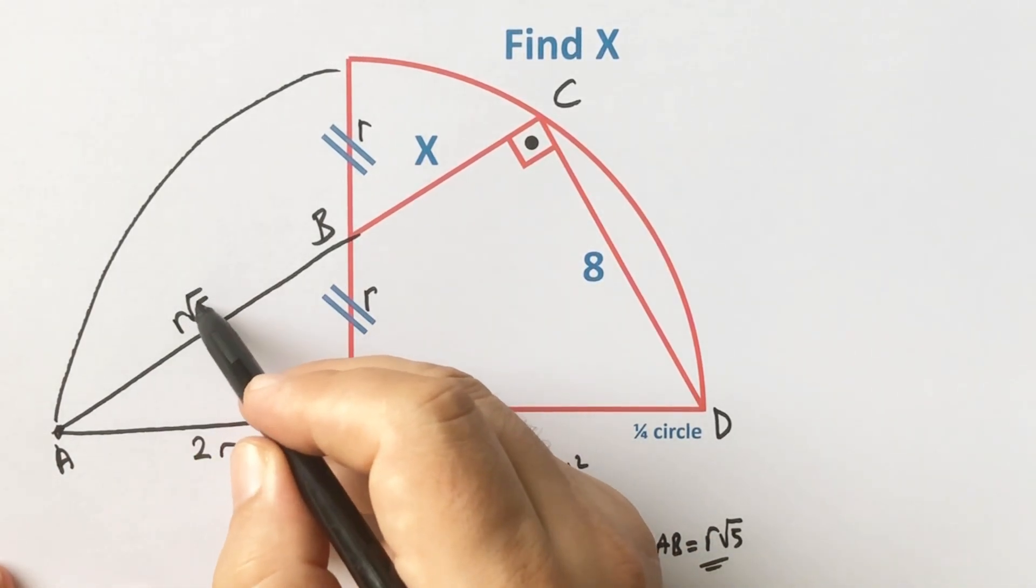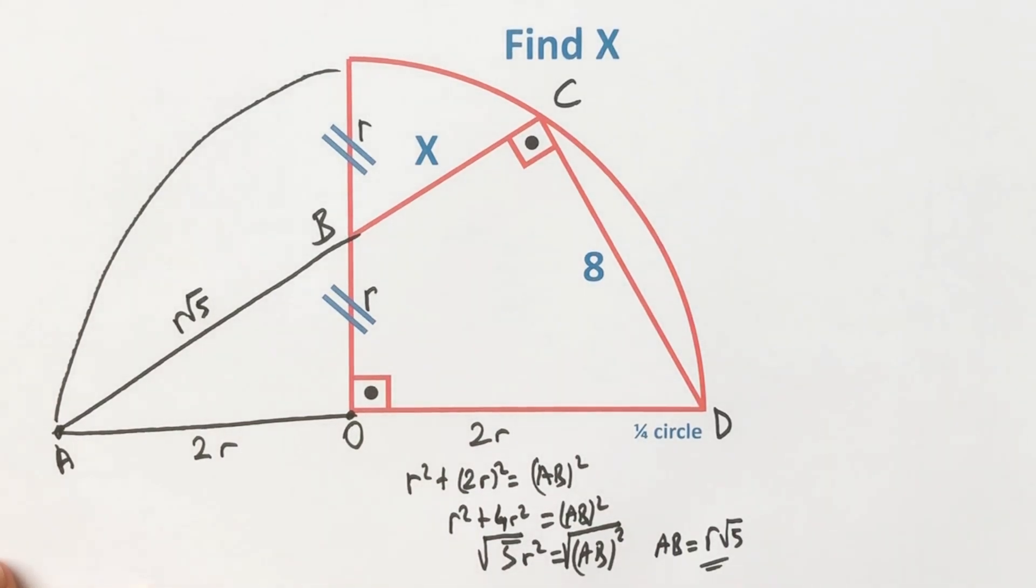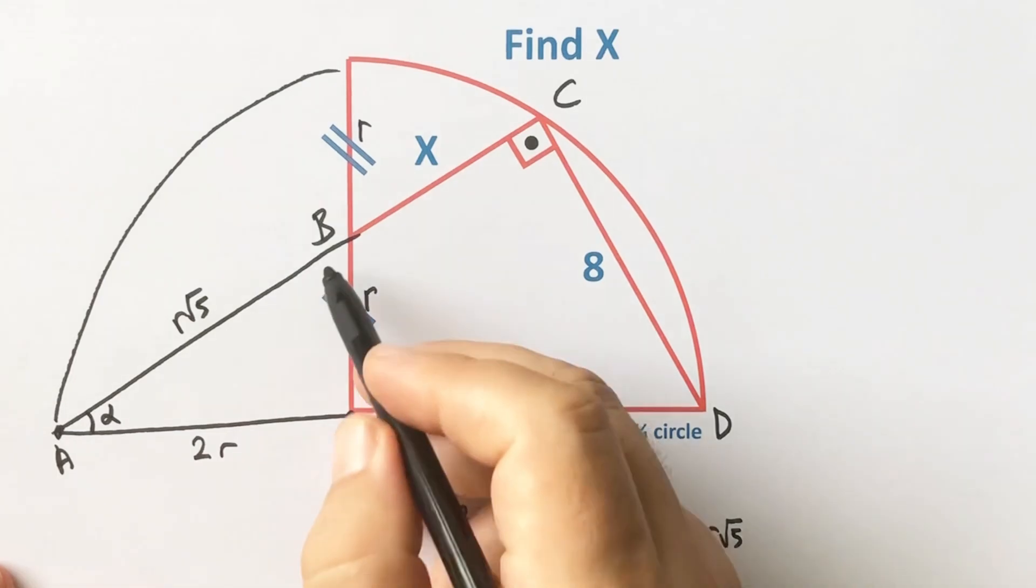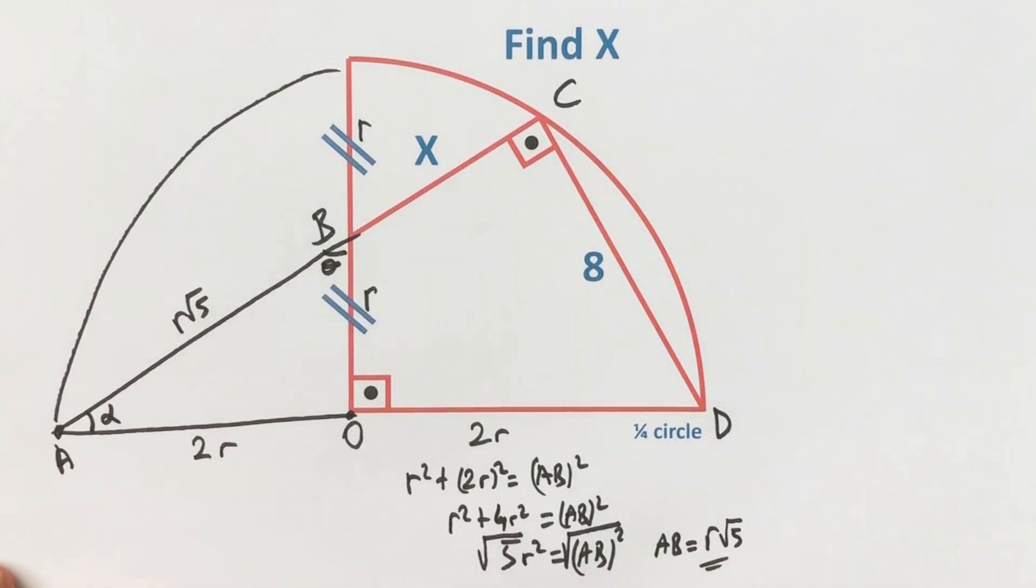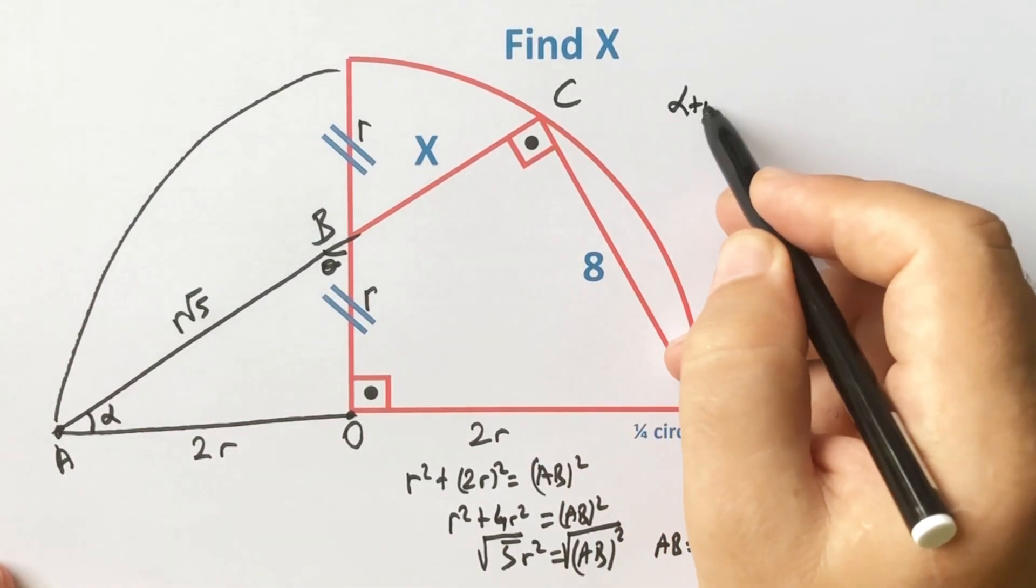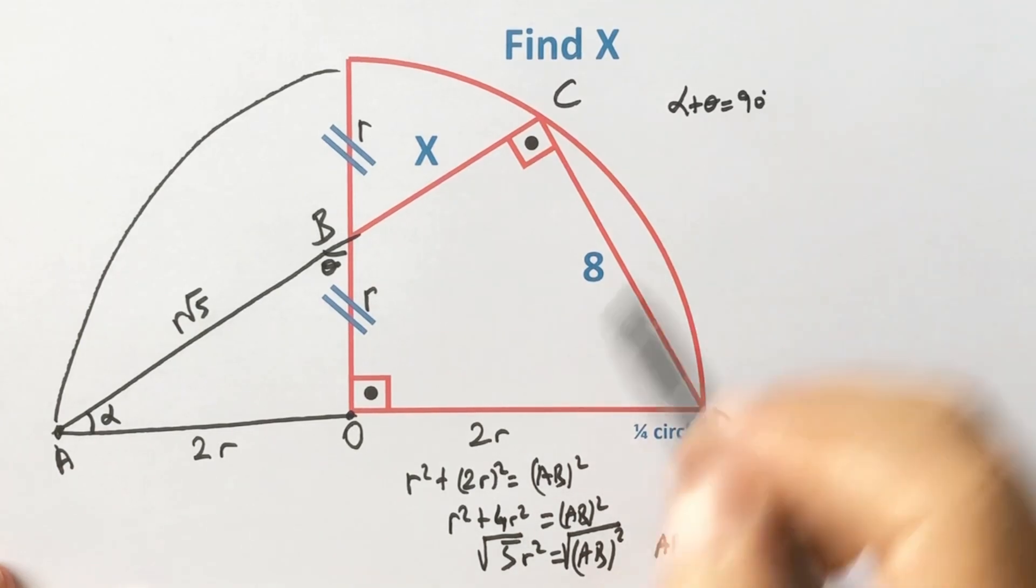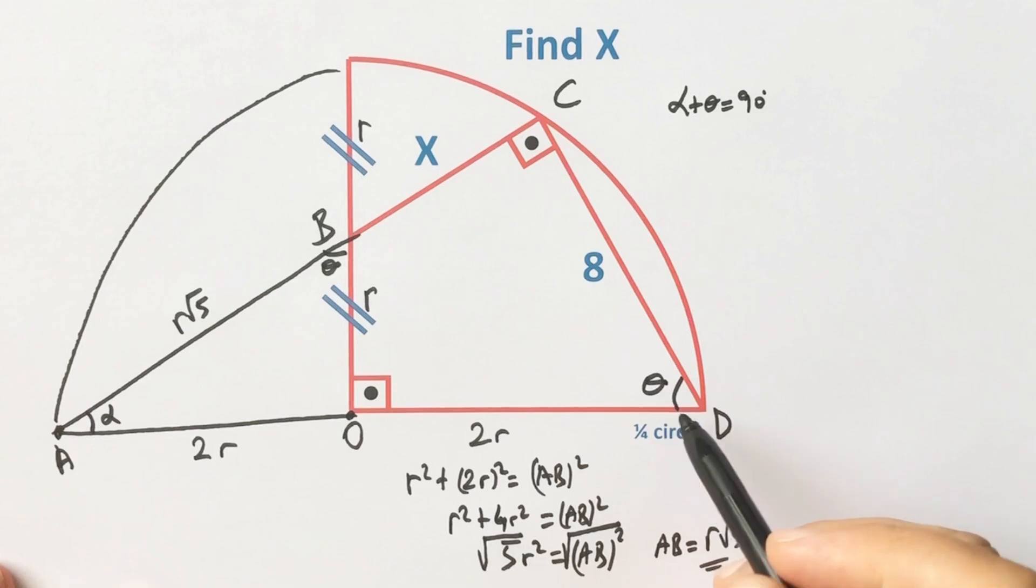AB is R√5. Let's call these angles alpha and theta. Since alpha plus theta equals 90 degrees, if this angle is alpha, then this angle must be theta.